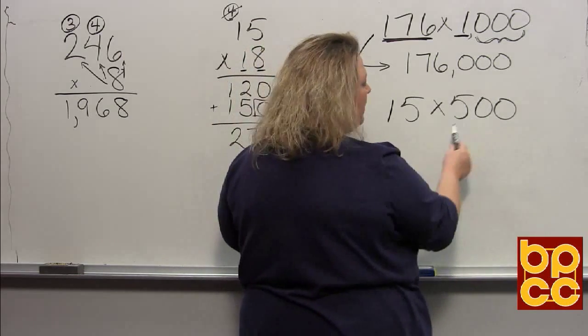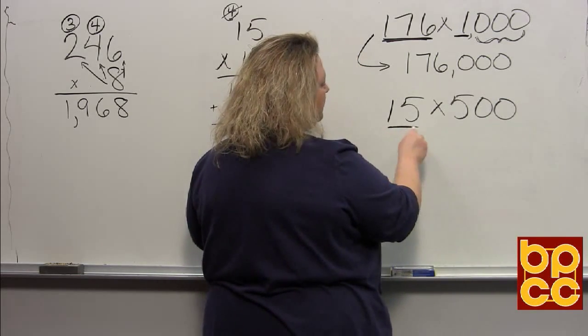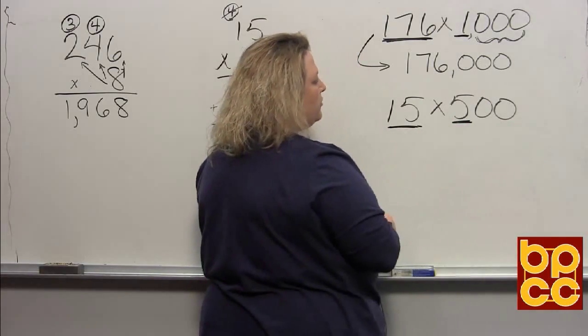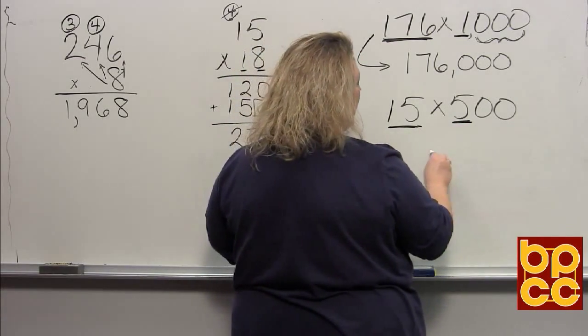Our last one that we're going to do is 15 times 500. Again, shortcut: do 15 times 5, and when you do that, that is 75. Then you add the two zeros at the end to make thousands: 7,500.